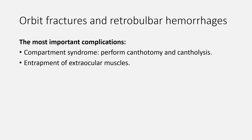Now let's move to orbit fractures and retrobulbar hemorrhages. Fractures of the orbit may cause bleeding in the muscle cone or around it. If bleeding is significant enough, a compartment syndrome can develop that obstructs blood supply to the optic nerve and globe. Vision loss can occur after about 1.5 hours of impaired blood supply, so immediate treatment is imperative. Signs of retrobulbar hemorrhage with compartment syndrome include decreased vision, elevated eye pressure, asymmetrical proptosis, resistance to retropulsion, and tight eyelids. If concerned about compartment syndrome, immediately perform canthotomy and cantholysis. Orbital fractures can also result in entrapment of extraocular muscles; repair within 48 hours is recommended to avoid muscle ischemia and permanent damage.